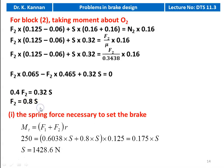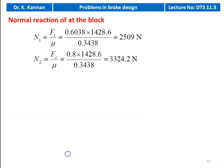The spring force necessary to set the brake: MT = (F1 + F2) × R. So 250 = (0.6038S + 0.8S) × 0.125 = 0.175S. Therefore S = 1428.6 Newton. Normal reactions: N1 = F1/μ' = 0.6038 × 1428.6 / 0.3438 = 2509 Newton. N2 = F2/μ' = 0.8 × 1428.6 / 0.3438 = 3324.2 Newton.